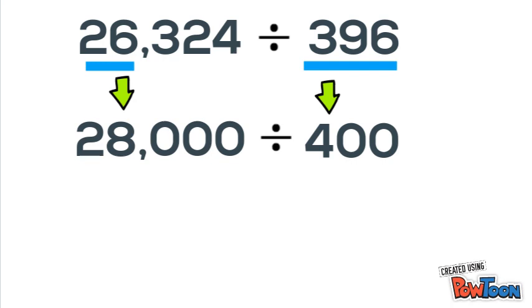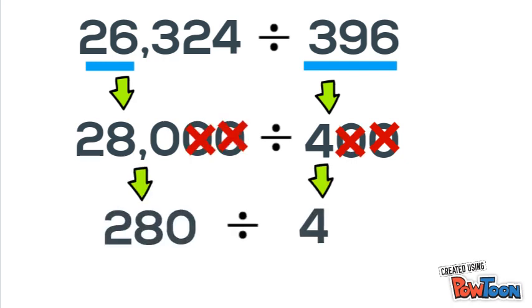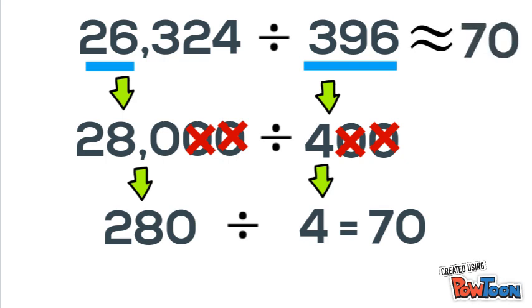So now cross out two zeros and we're left with 280 divided by 4. 28 divided by 4 is 7, so 280 divided by 4 is 70. And 70 is our approximate or our estimated answer to this division problem.